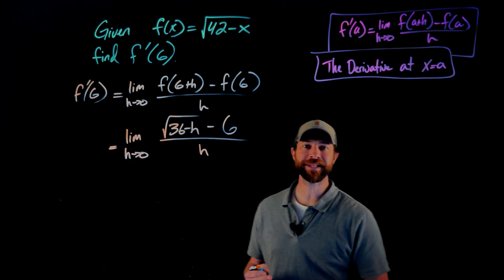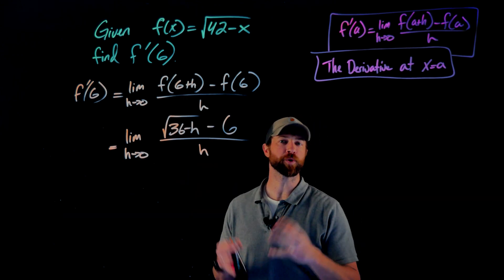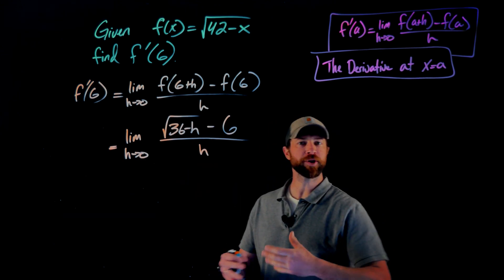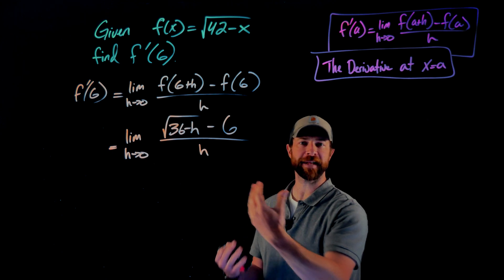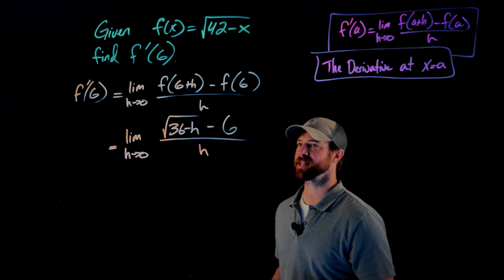Now, as always with these limits, in this case, my denominator is going to zero, which is the main issue. What I need to do is figure out a way to get rid of that zero in the denominator, see if I can evaluate this limit.